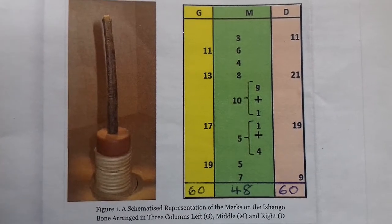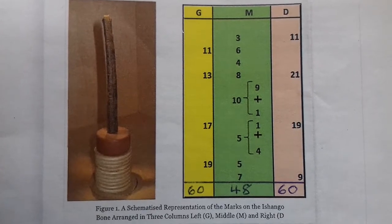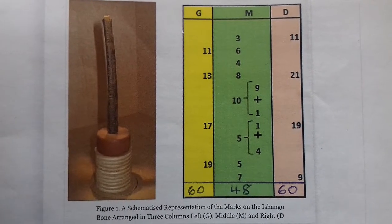We see that the main calculations for this mathematical sieve are housed in the middle column, M, in green.